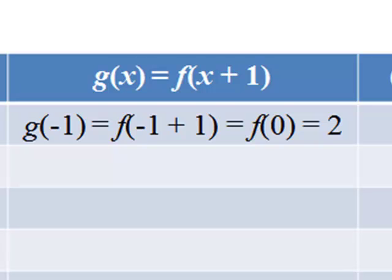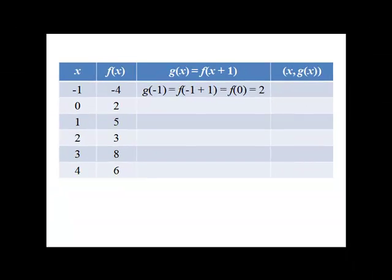So when we calculate g of negative 1, we're plugging negative 1 in for x. What we have is f of negative 1 plus 1, which is f of 0, so it's 2. We're not actually changing the output, we're actually changing the location of the output. As a point, we have the point negative 1, 2.